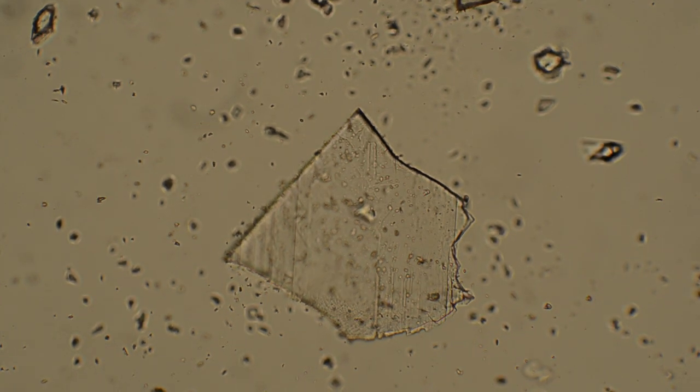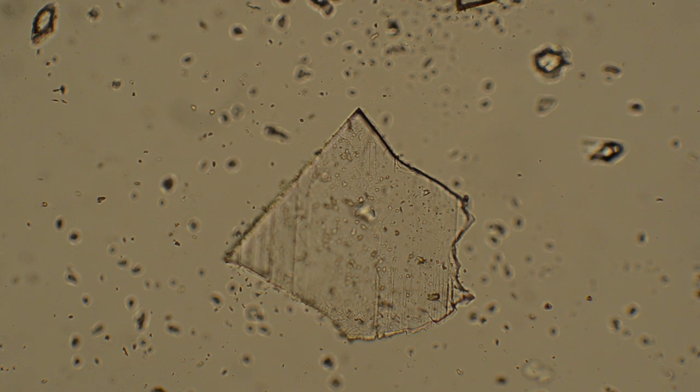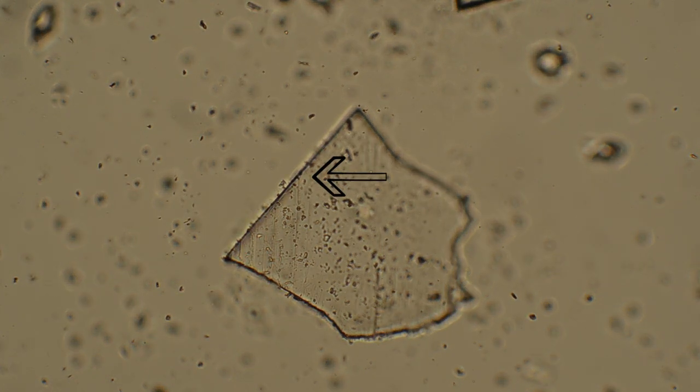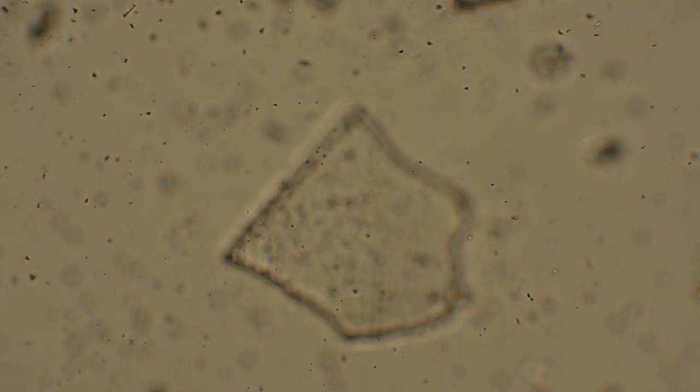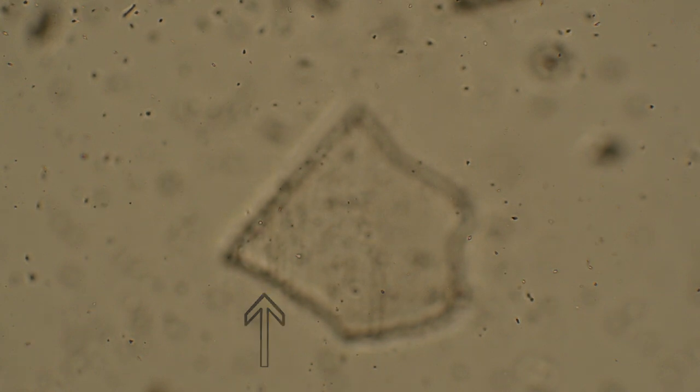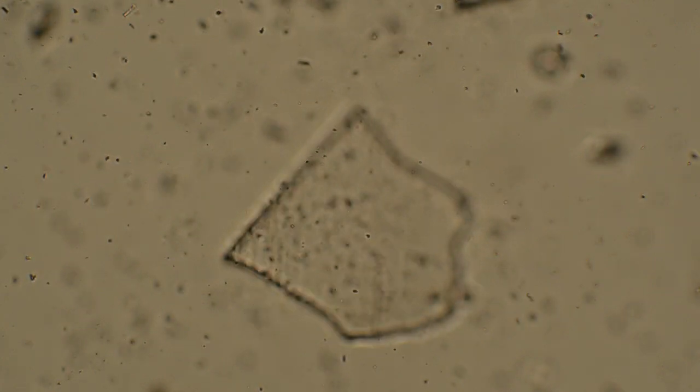What we can also see is the Becke line moving in and out of the mineral at the same time. Notice that at the top, it moves out, while at the bottom, it moves in. In this mineral, light behaves differently depending on orientation. This property is known as anisotropy and will be explored in the following modules.